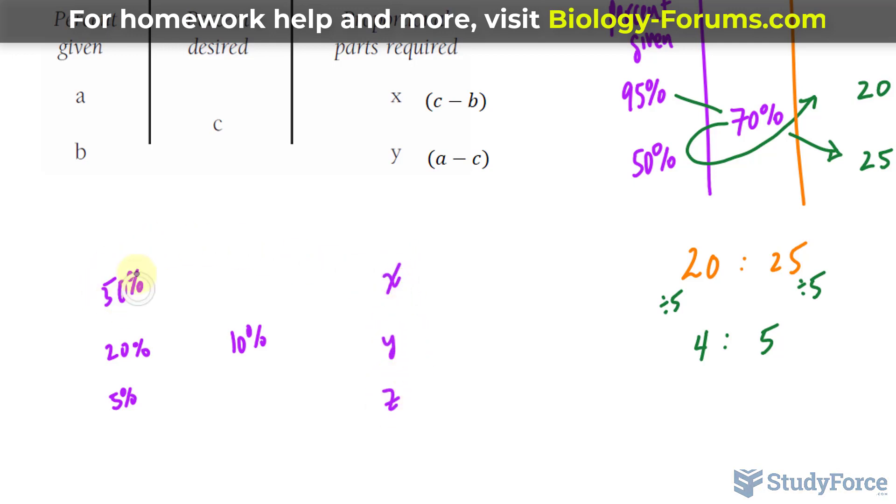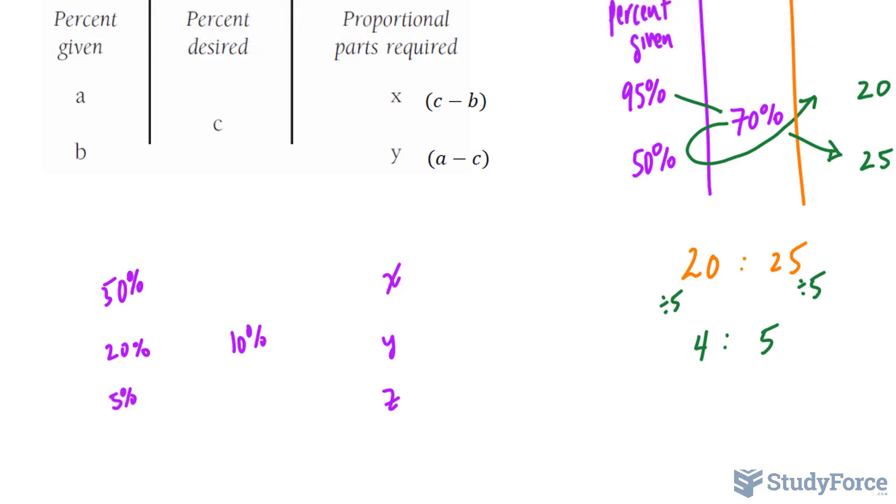So x represents the amount of parts of the 50%, y represents the amount of parts of the 20%, and z represents the amount of parts of the 5%. But unlike in questions 1 and 2, where we only started with two solutions to make our final, here we have 3, 50, 20, and 5.